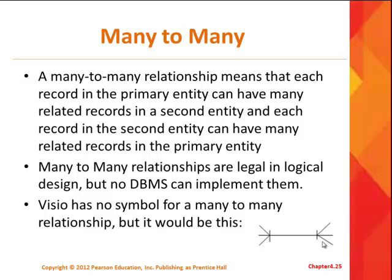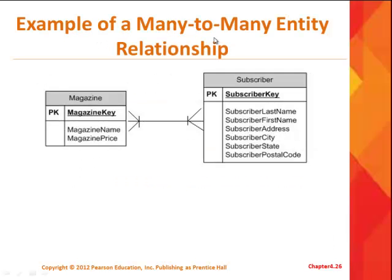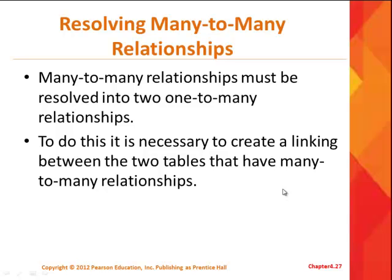Eventually you would break these many-to-many relationships down into two one-to-many's. Here's a nice example from the textbook: a magazine could have many subscribers, and each subscriber could subscribe to many magazines. So if you're creating a database for a company selling magazines, they might sell many different magazines to many subscribers. You could come up with a many-to-many in your early logical design, but we can't implement it, so we've got to break it down into two one-to-many relationships.